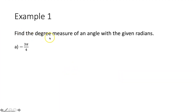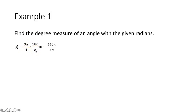Example one says find the degree measure of an angle with the given radians. We're going to start with negative 3π over 4. To convert from radians to degrees, we just multiply our angle measure in terms of radians by 180 over π. We multiply the numerators together, multiply the denominators together, and simplify. The π's cancel out, and 4 goes into 540 135 times. So negative 3π over 4 is equivalent to negative 135 degrees.